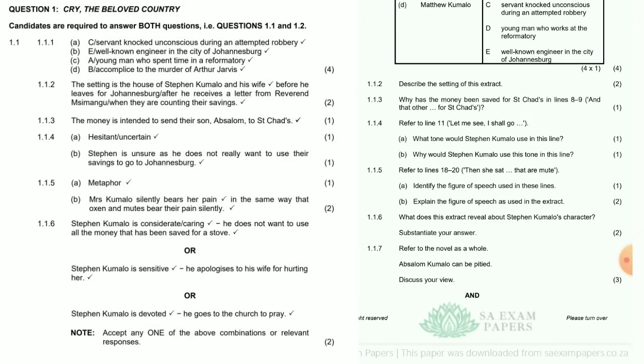Question 1.1.4: Refer to line 11 — 'And I shall go.' What tone would Stephen Kumalo use in this line? This is hesitant and uncertain — he's not sure. Part B: Why would Stephen Kumalo use this tone? Stephen is unsure as he does not really want to use their savings to go to Johannesburg.